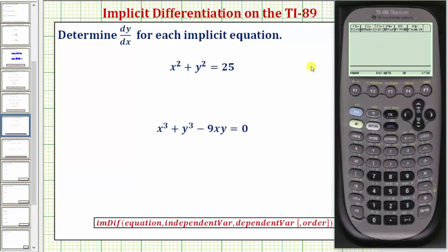Let's first press F3 and then the implicit differentiation function is the last option in this menu. Notice how here we see implicit differentiation, option D.